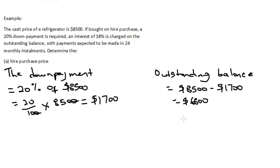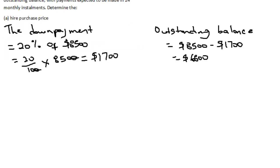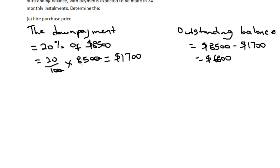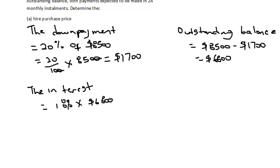Now let's determine the interest that the institution charges. We already know it's 18%, but let's find the dollar value. The interest is equal to 18% of the outstanding balance, which is $6,800. So that's 18 over 100 times 6,800. The zeros cancel and we get 18 times 68, which equals $1,224.